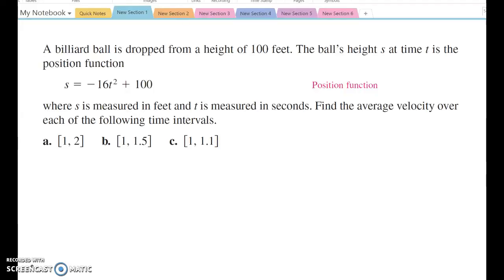So let's try to solve average velocity for the interval between 1 and 2. So as we discussed before, average velocity, we say rate equals delta s over delta t.